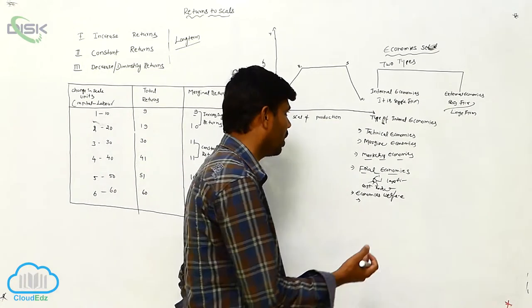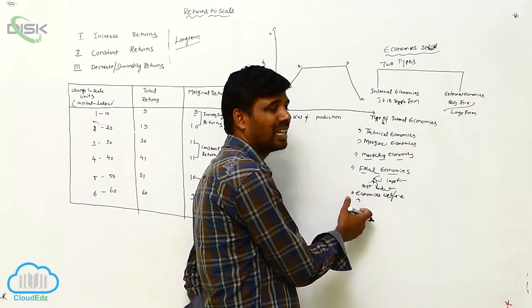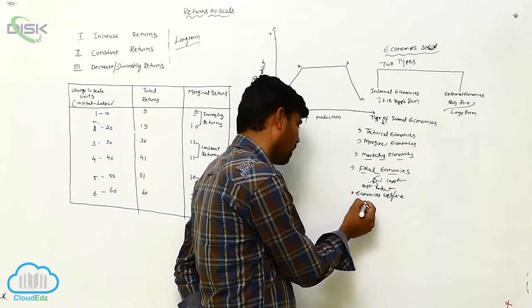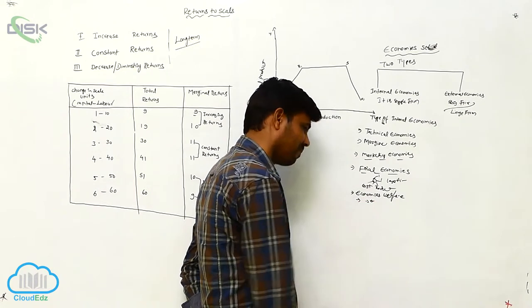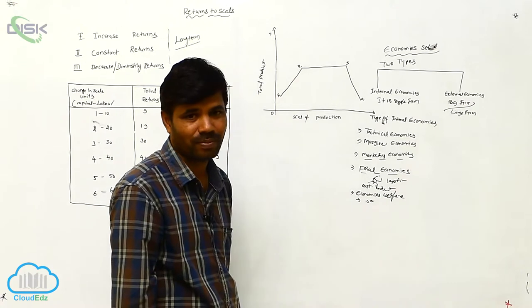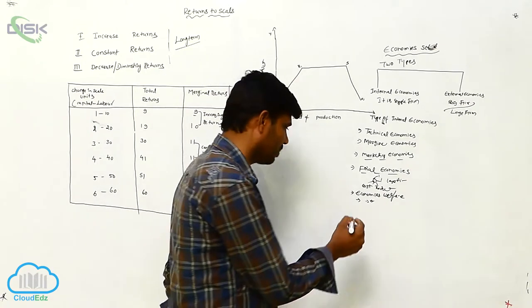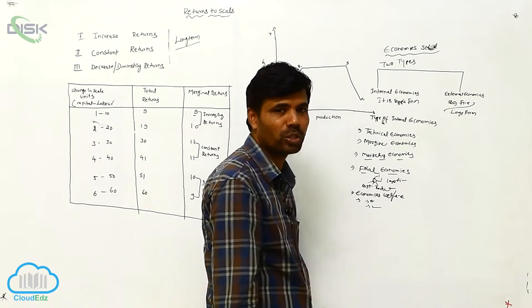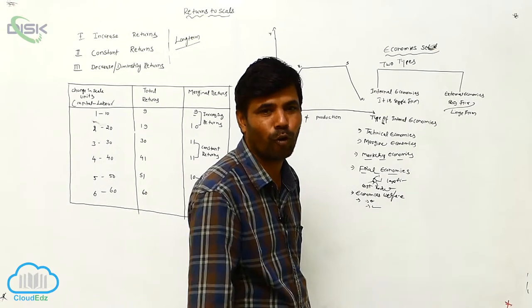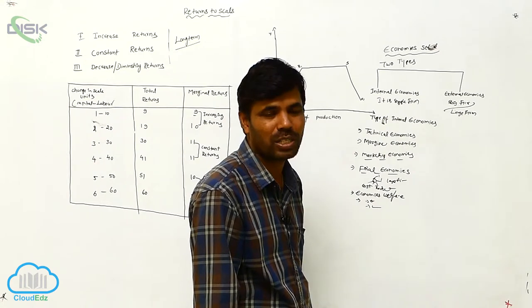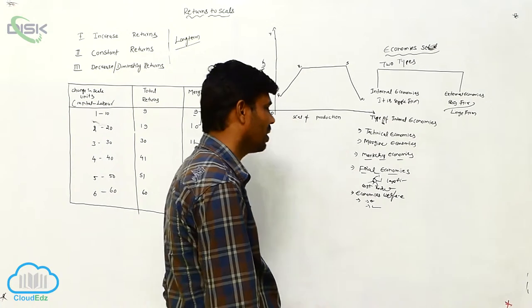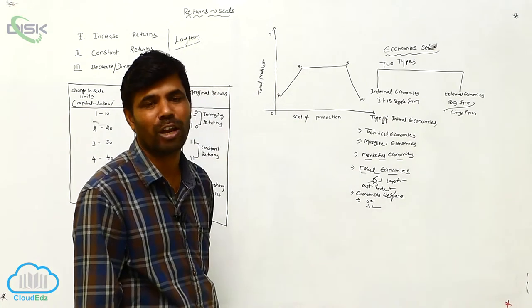If any firm gets huge profit, so what will they do? They can expand their business, they expand the firm, they are providing employment, they are doing social activities. But a single firm, small scale firm, single digits firm, they can't provide the welfare.